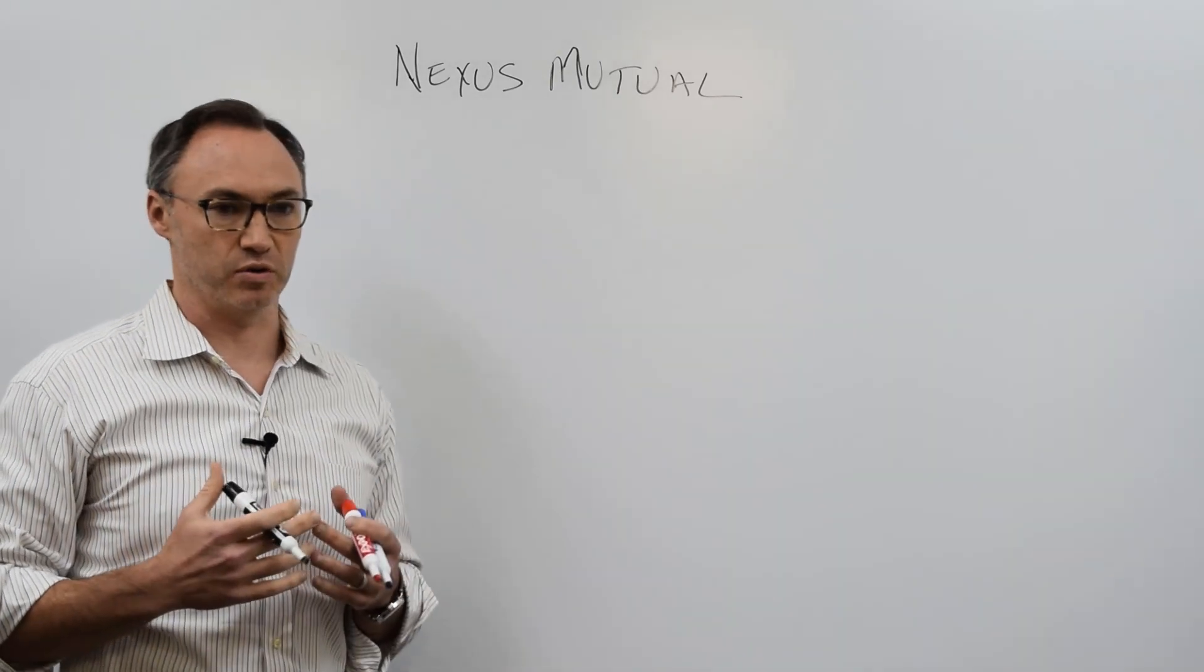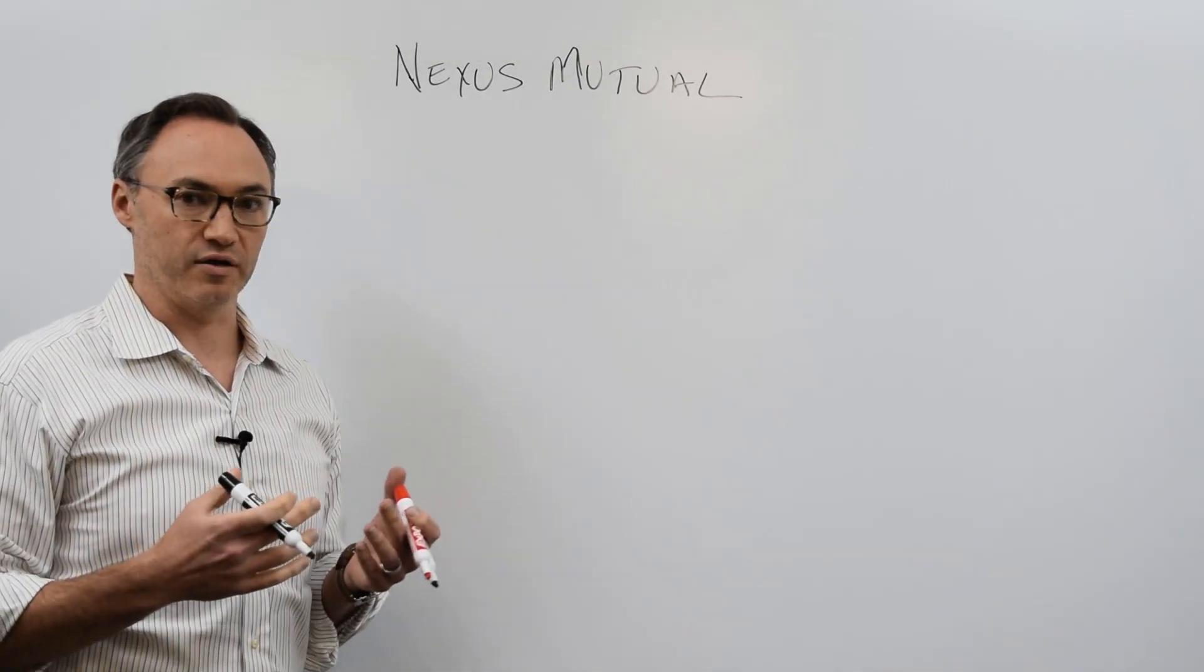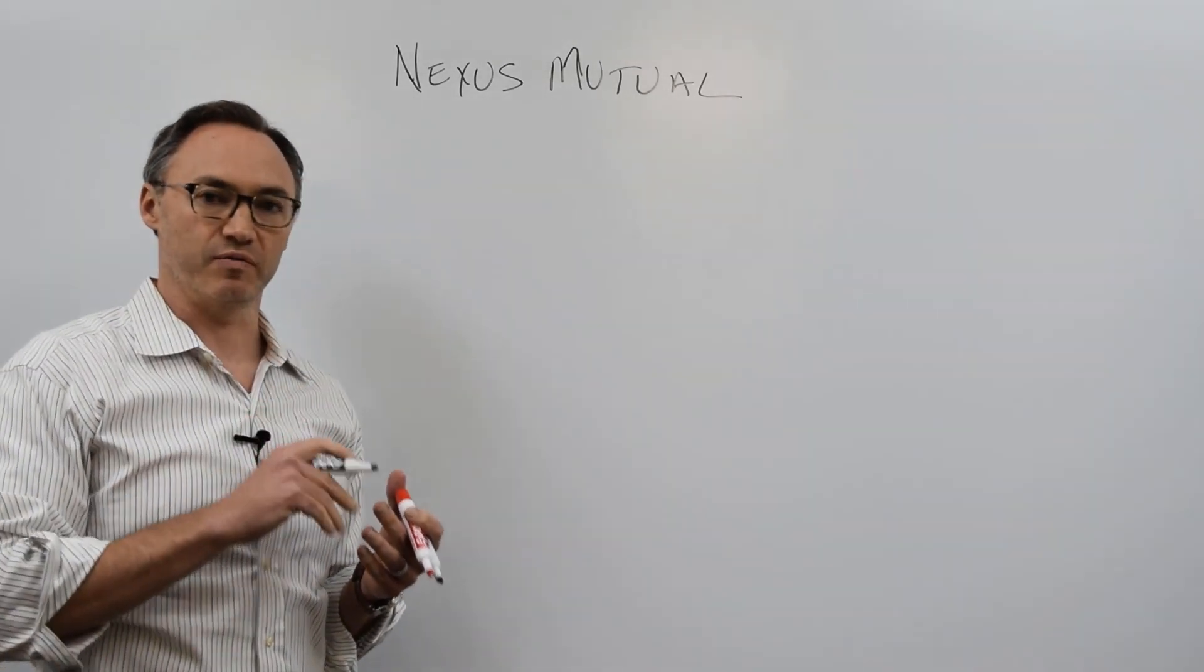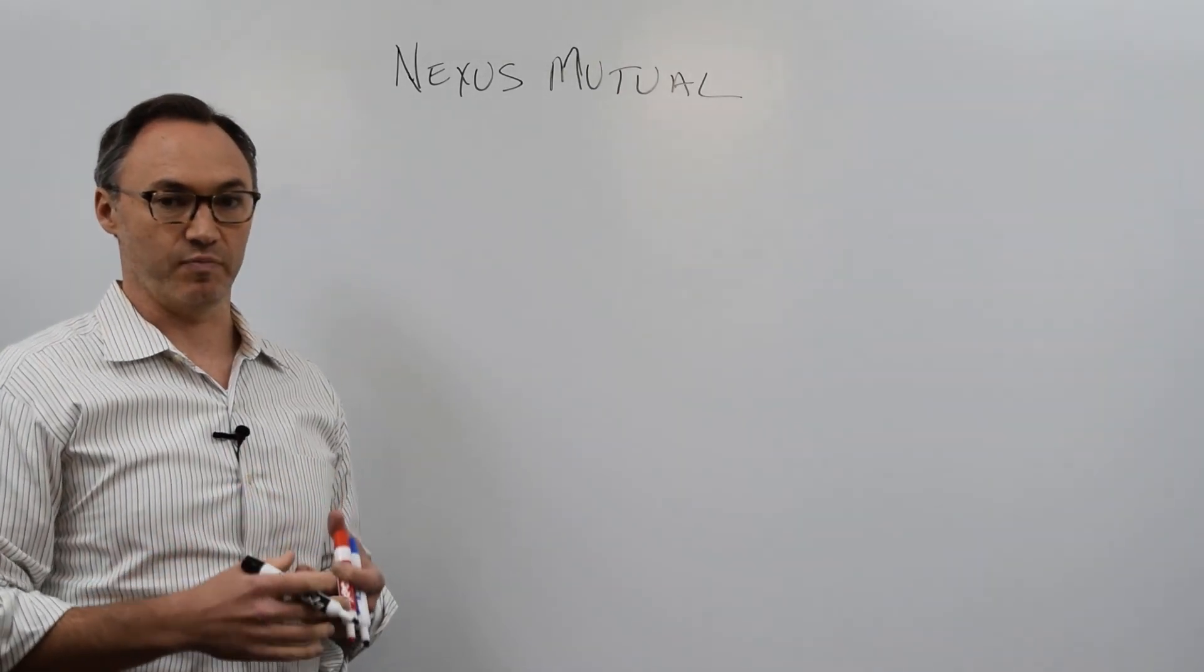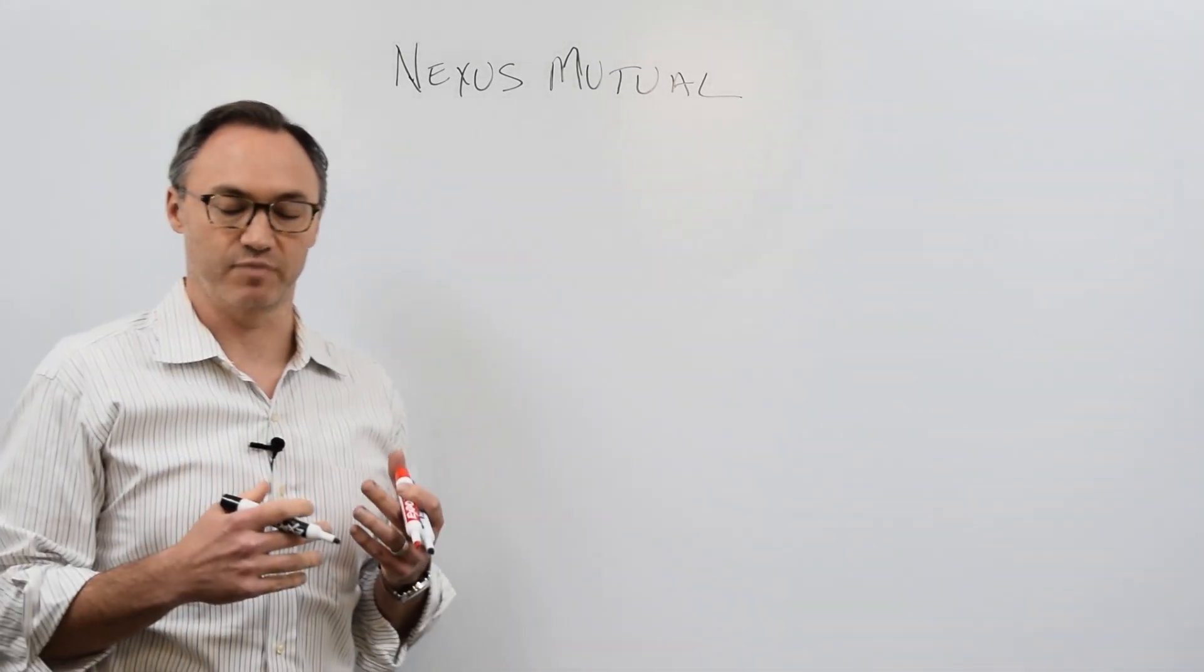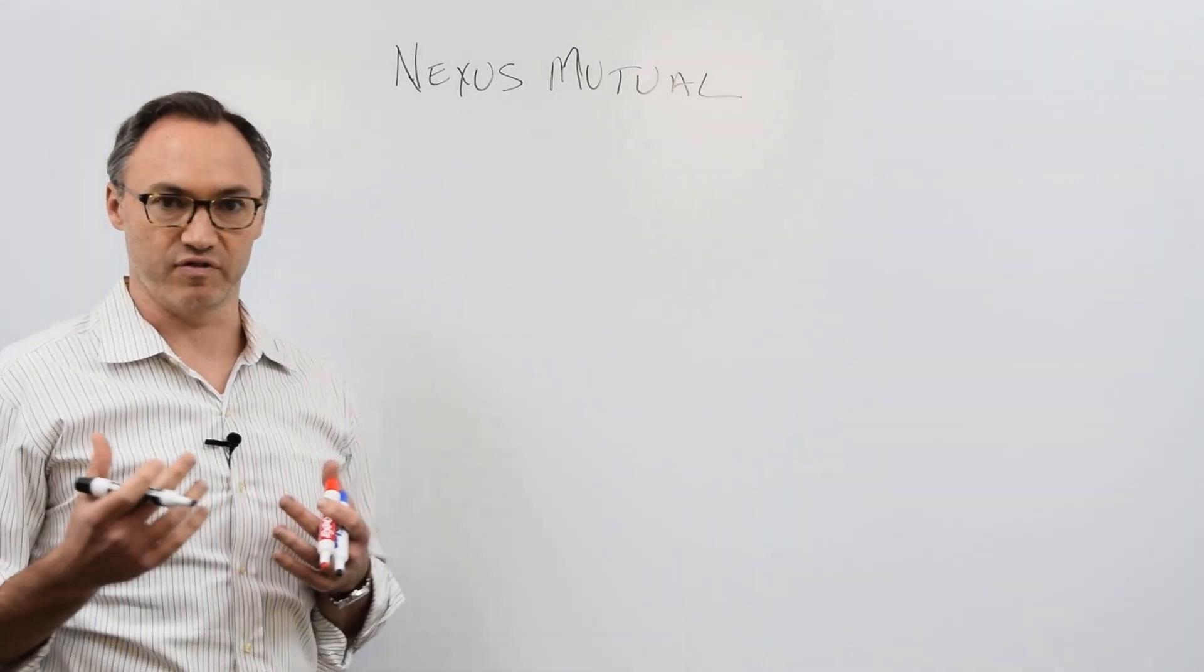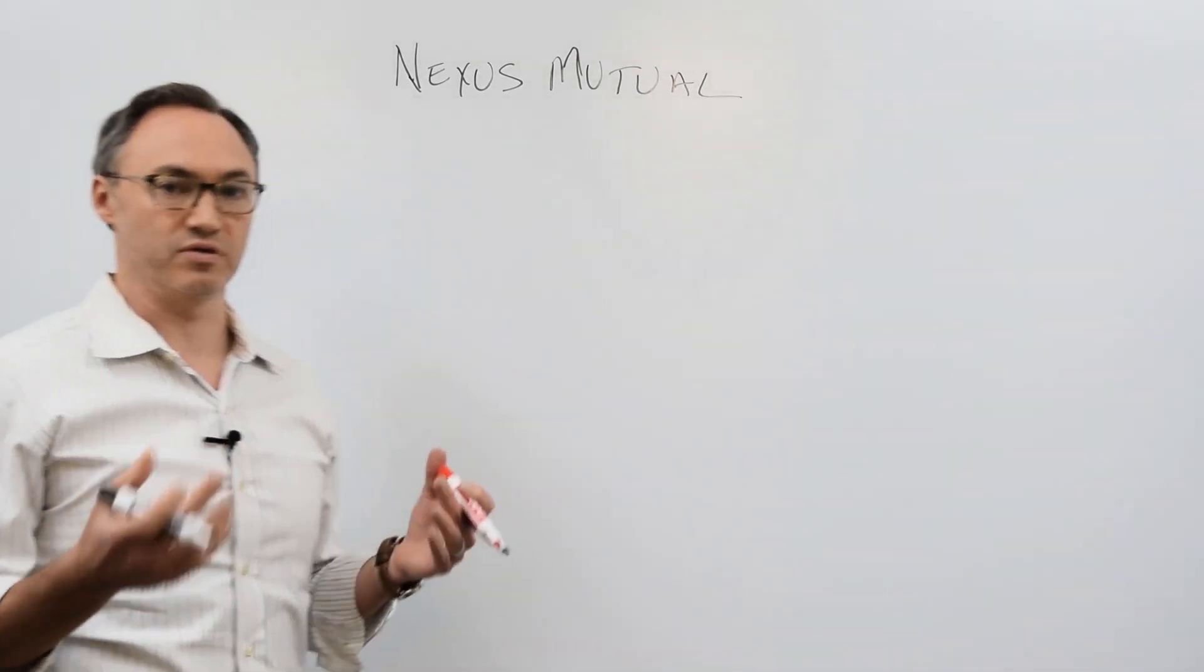The idea of Nexus Mutual and what they're trying to solve is that insurance companies worldwide spend about 35% of premiums on their own expenses, right? That doesn't get issued back to policyholders for claims or anything. Nexus Mutual aims to use blockchain technology to cut out about 17 or 18% of those costs.